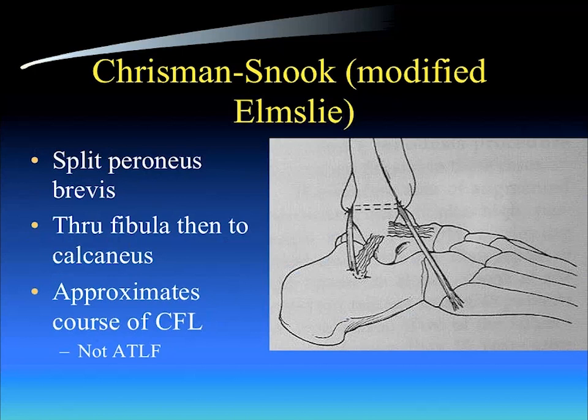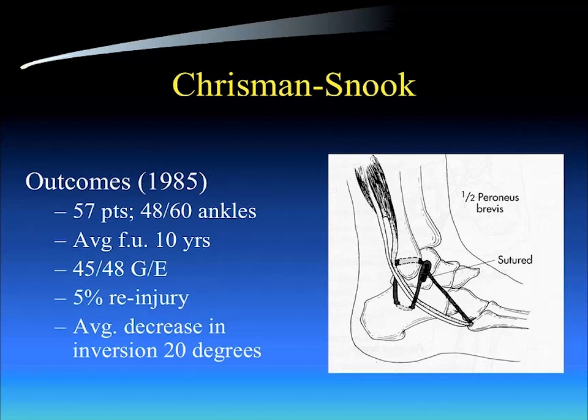From there, we went to the Chrisman-Snook, or the modified Elmsley procedure. This is different in that you only used half of the peroneus brevis. You split the peroneus brevis and rerouted it from the front of the fibula to the back and then down to the calcaneus. It very nicely approximated the course of the calcaneofibular ligament, but did not do a good job of mimicking the anterior talofibular ligament — the graft came in almost 60 degrees to its typical course. So not good control of anterior drawer, but very good control of the calcaneofibular ligament.